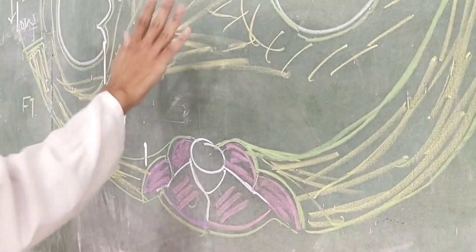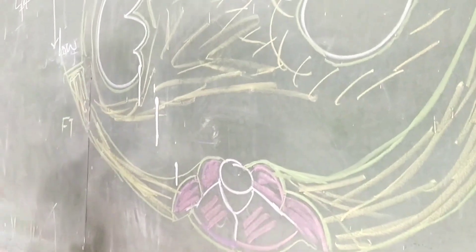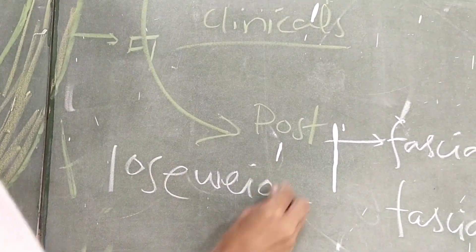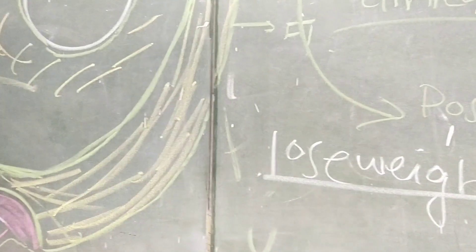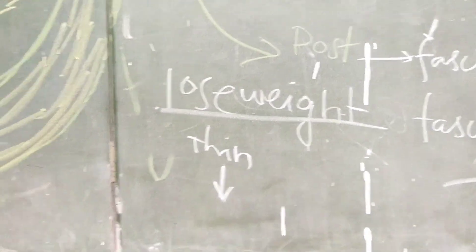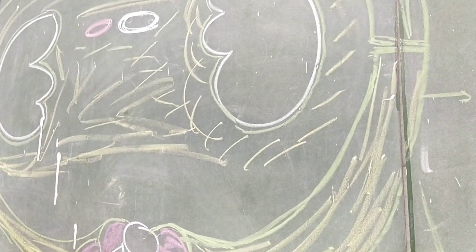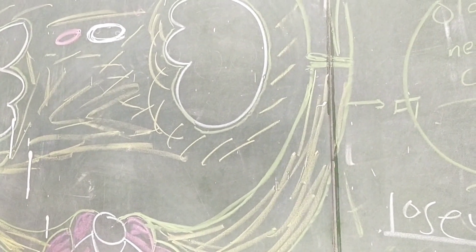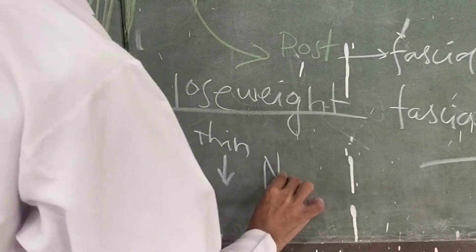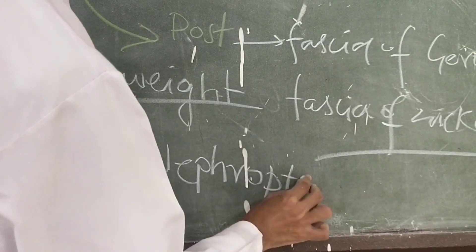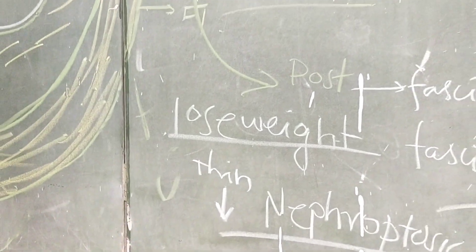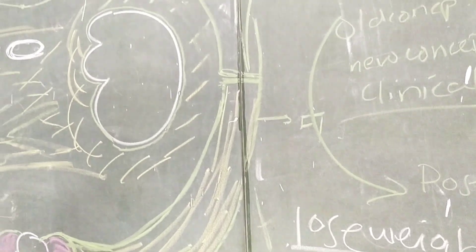If the perinephric fat is absent — for example in thin, lean people or those who lose weight — this fat layer becomes very thin. Since this fat layer supports the kidneys and prevents them from floating or experiencing trauma, a very thin fat layer causes the kidneys to float in the abdominal cavity. This condition is known as nephroptosis, in which the kidneys float in the abdominal cavity and can be damaged by trauma.